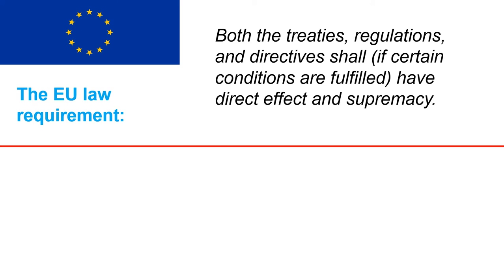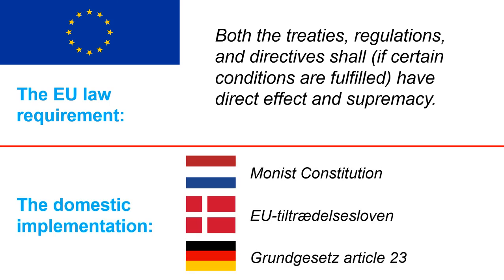That said, we must remember that the EU member states remain sovereign. The doctrines of direct effect and supremacy are technically speaking merely duties for the member states to enact the necessary constitutional and legislative measures to ensure such effects in their domestic legal systems. How this duty is implemented varies: some, such as the Netherlands, have a monist legal order, meaning that no particular adaptations are necessary. Others, like Germany, have implemented Union law en bloc through a provision of its constitution. Denmark has done the same, but at the level of domestic legislation. What they all have in common is that the effects of Union law, including the doctrines of direct effect and supremacy, are ensured by domestic provisions that implement Union law en bloc.